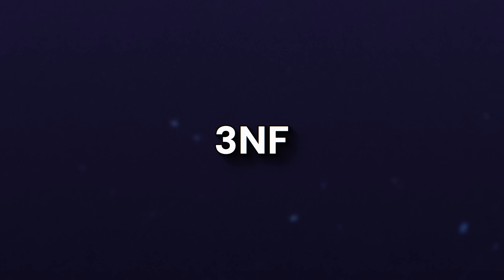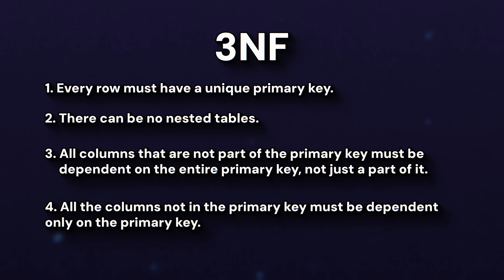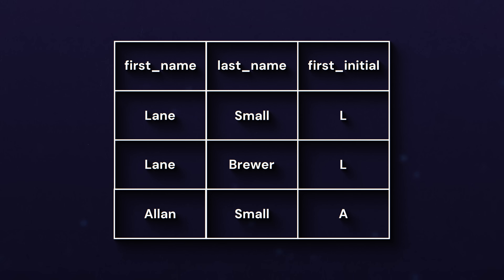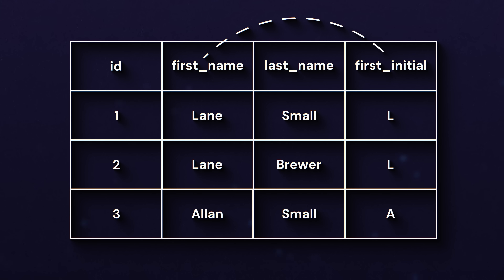Now onto third normal form — it follows all the rules of first and second normal form but adds one additional rule: all columns not in the primary key must be dependent only on the primary key. Let's go back to the same example, but add a unique primary key column, ID. So we've got: one, Lane Small, L; two, Lane Brewer, L; three, Allen Small, A. Technically this table does follow second normal form because first initial is dependent on first name, and first name is not part of the primary key anymore — that's the new ID column.